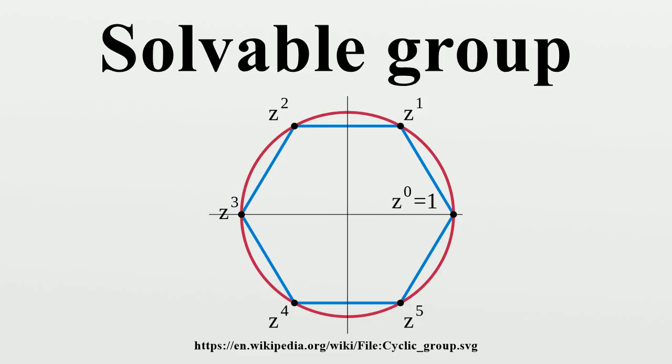The alternating group A4 is an example of a finite solvable group that is not super-solvable. If we restrict ourselves to finitely generated groups, we can consider the following arrangement of classes of groups: cyclic < abelian < nilpotent < super-solvable < polycyclic < solvable < finitely generated group.